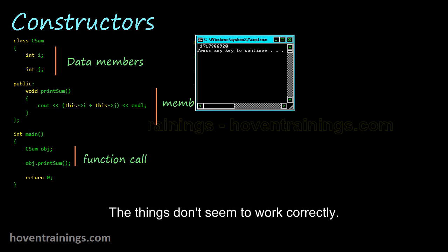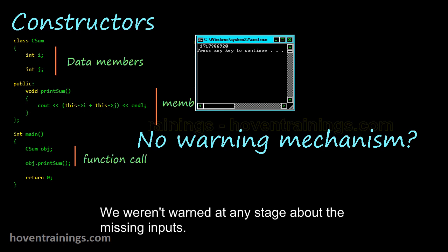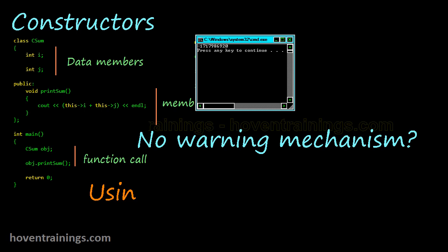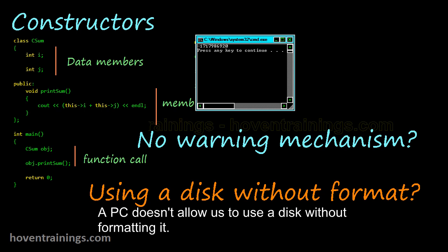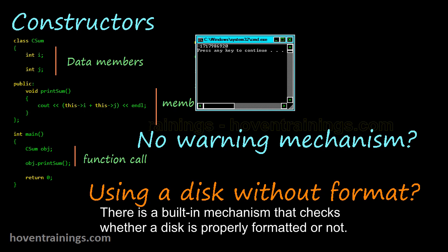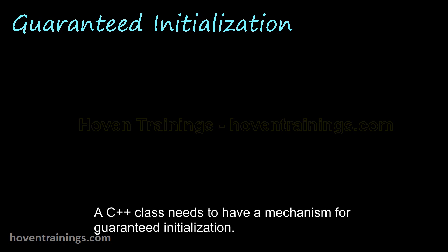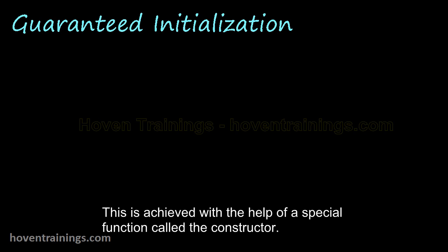The things don't seem to work correctly. We weren't warned at any stage about the missing inputs. A computing system should have built-in checks at places where things could go wrong. A PC doesn't allow us to use a disk without formatting it. There is a built-in mechanism that checks whether a disk is properly formatted or not. A C++ class needs to have a mechanism for guaranteed initialization. This is achieved with the help of a special function called the constructor.